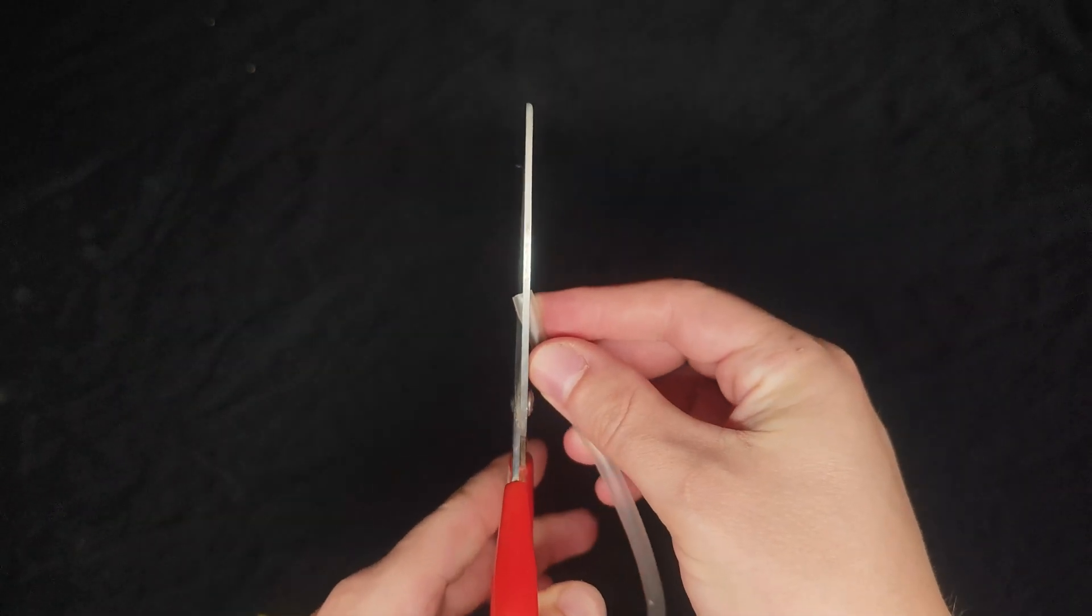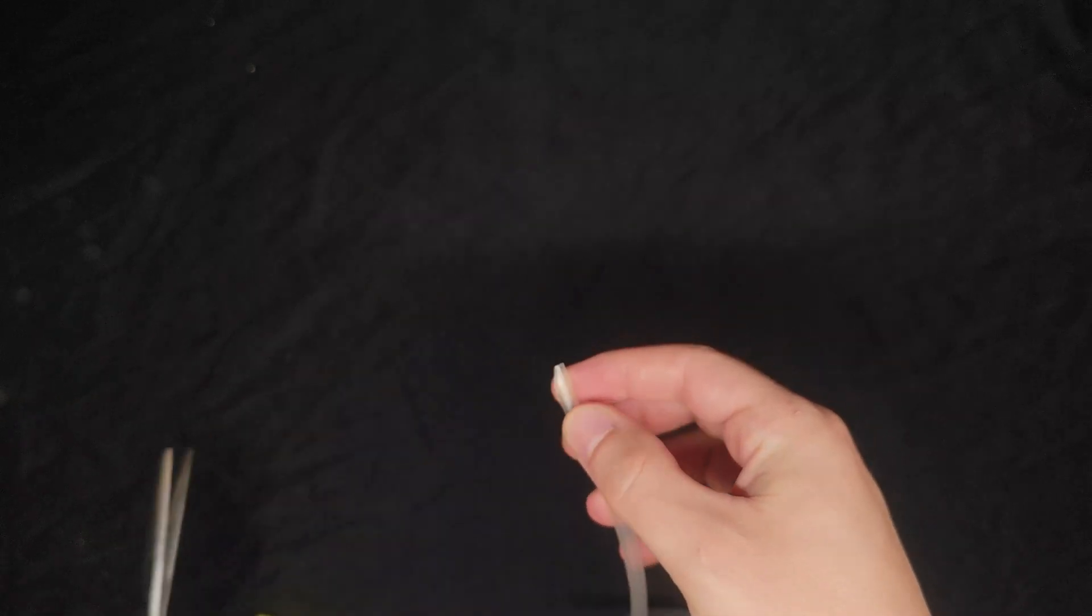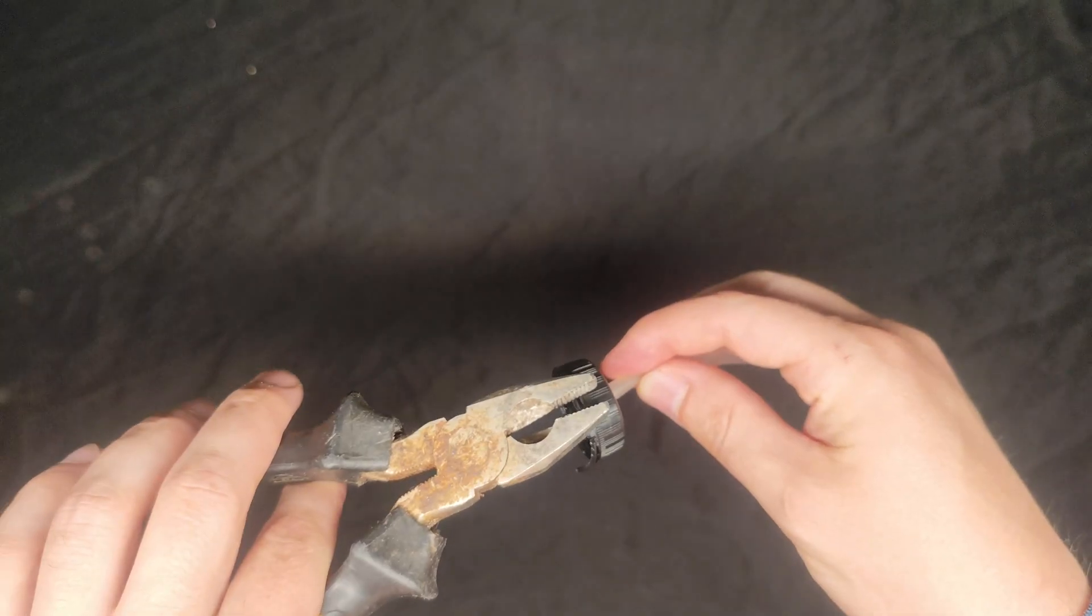Cut the tip of the tube into a point to help guide it through. Push it through the cap. You might need pliers to pull it from the other side.